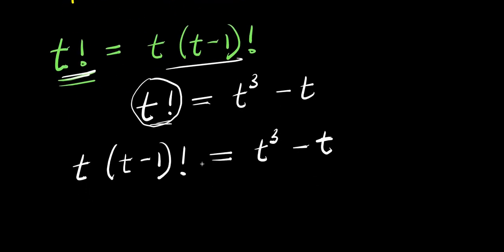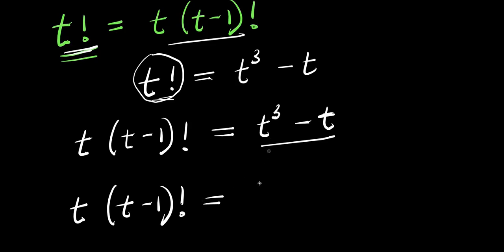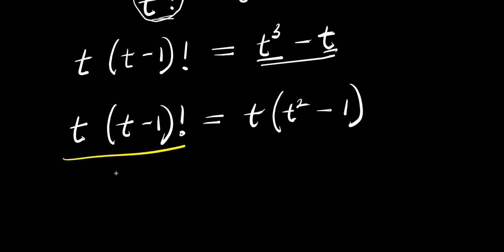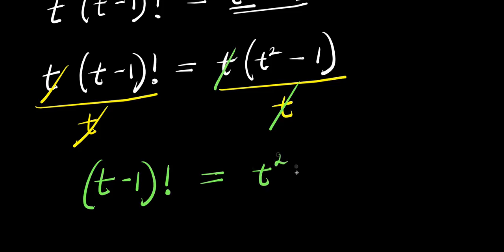At this point, we can factor out t from the right side. We have t times t minus 1 factorial on the left. Dividing t cubed by t gives t squared, and dividing t by t gives 1. So dividing both sides by t, we get t minus 1 factorial equals t squared minus 1.